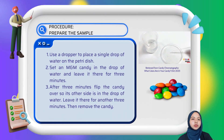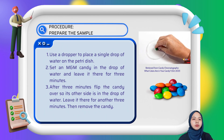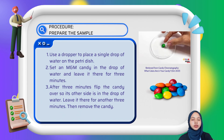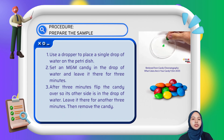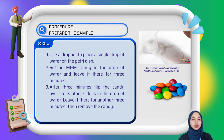For the procedure, first prepare the sample: use a dropper to place a single drop of water on the petri dish. Set an M&M candy in the drop of water and leave it for 3 minutes. After 3 minutes, flip the candy over so its other side is in the drop of water, leave it for another 3 minutes, and then remove the candy.